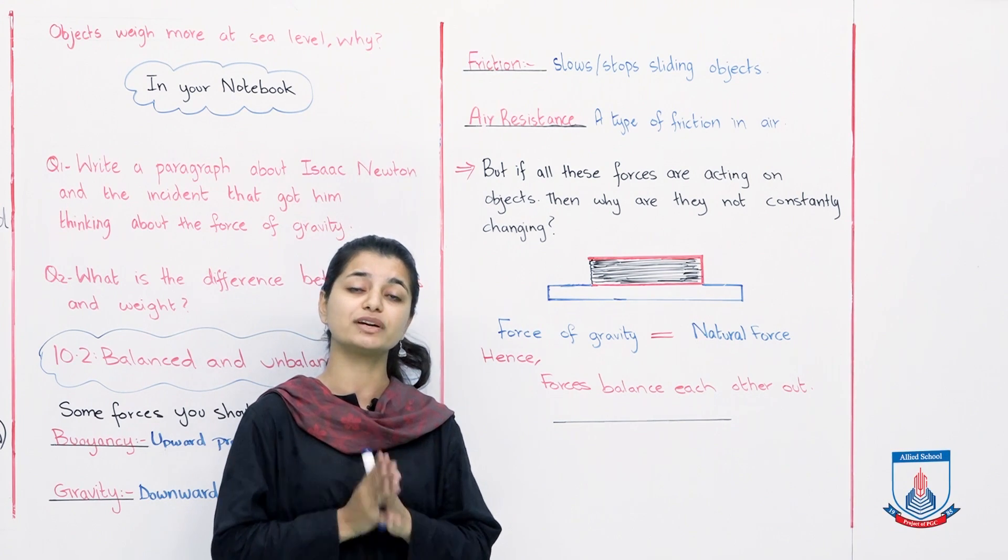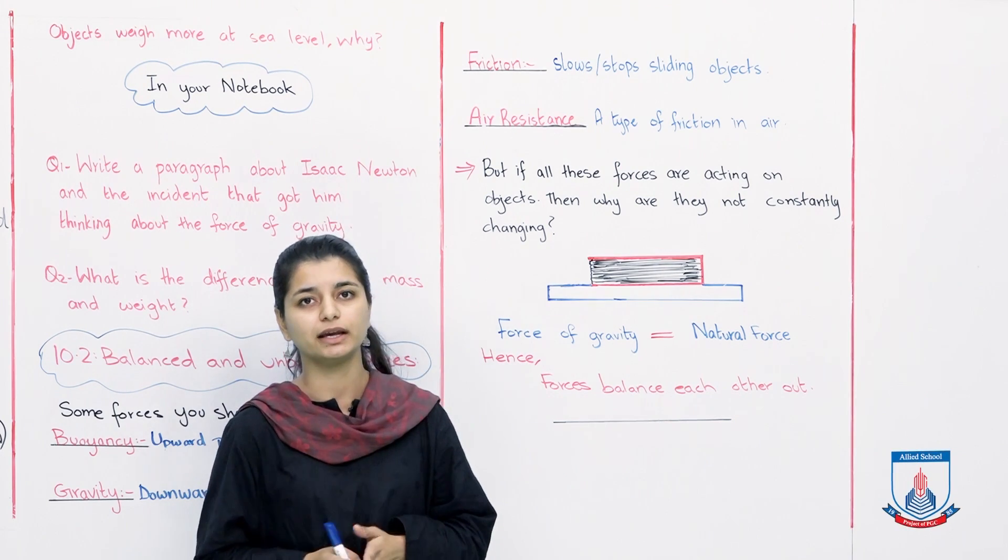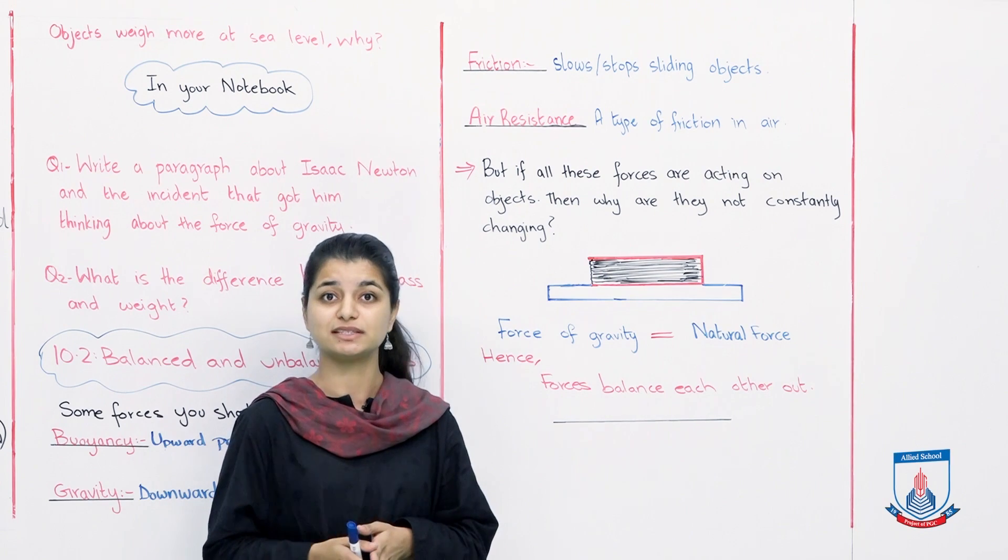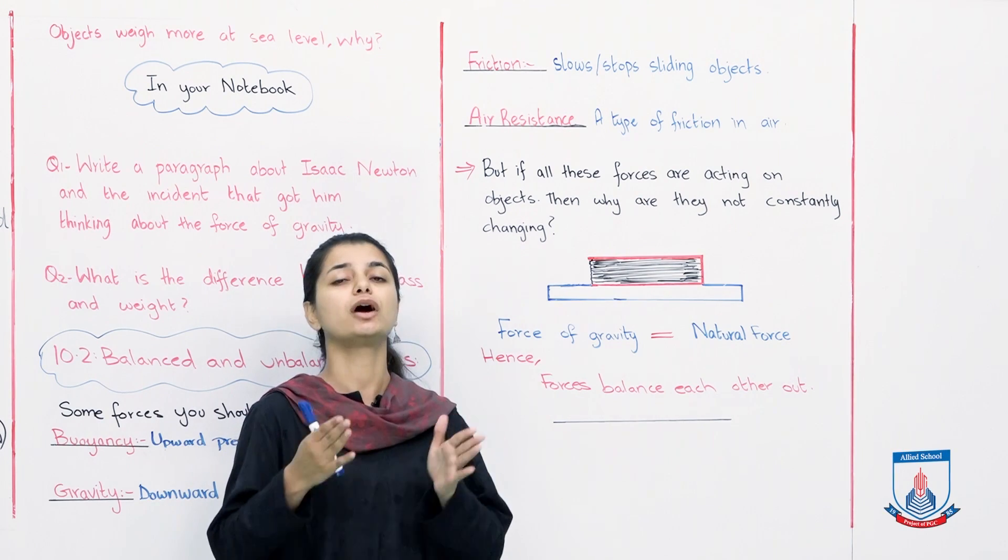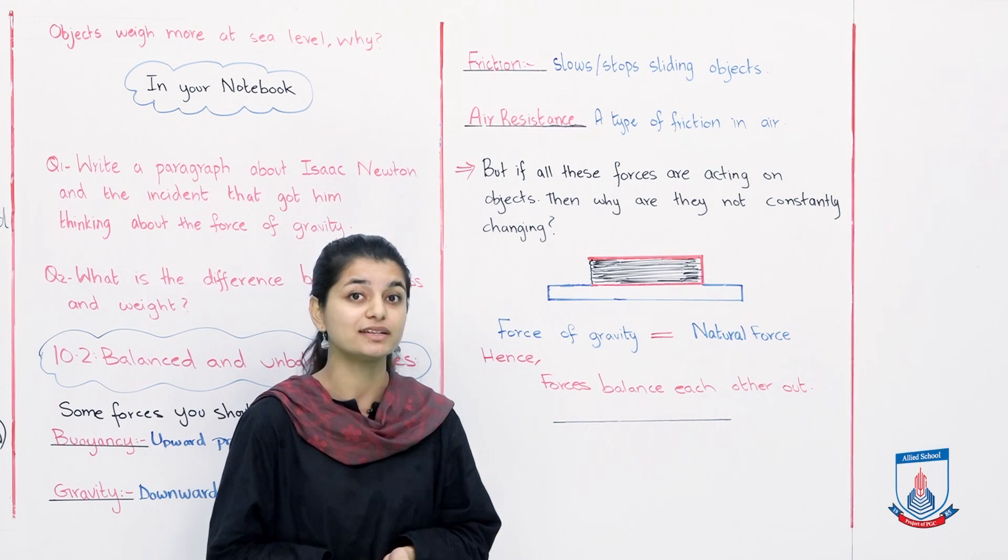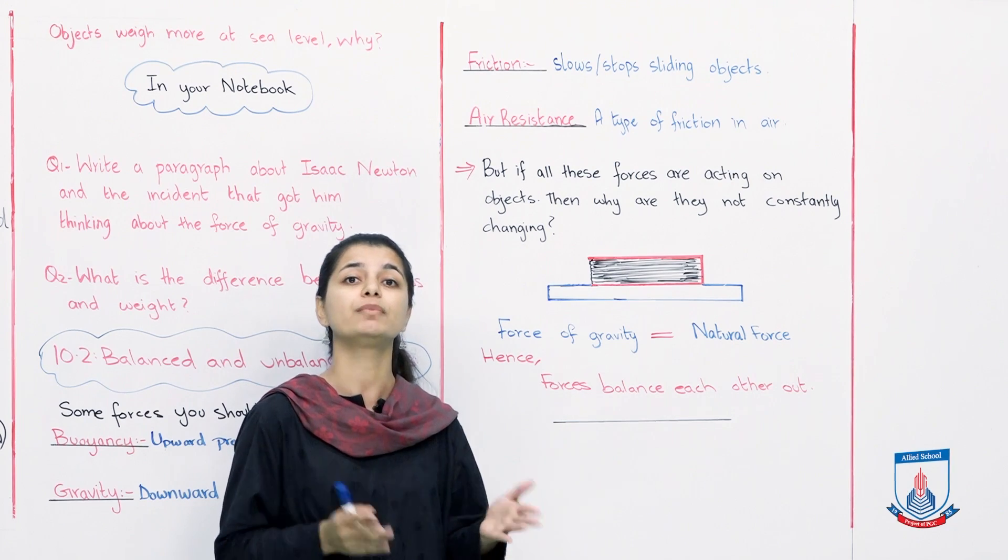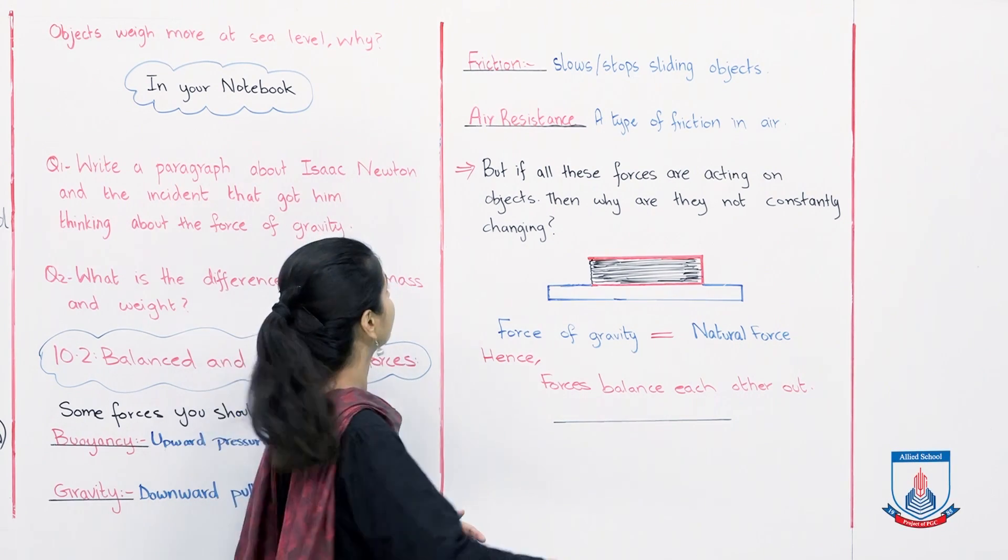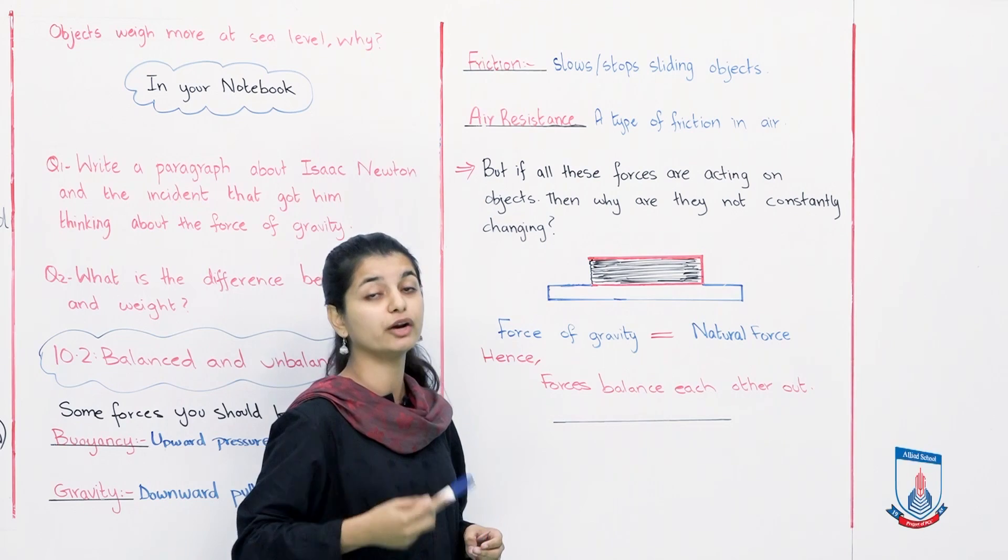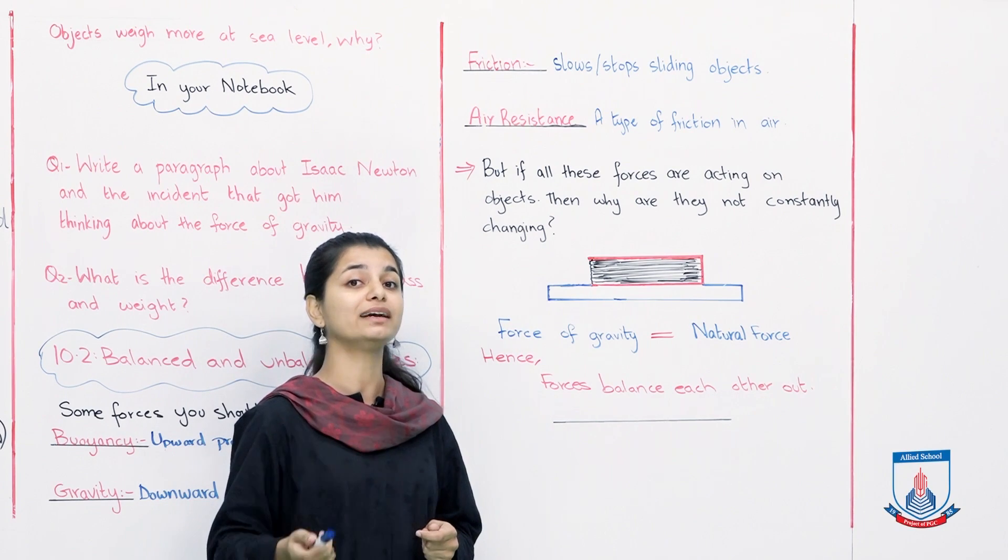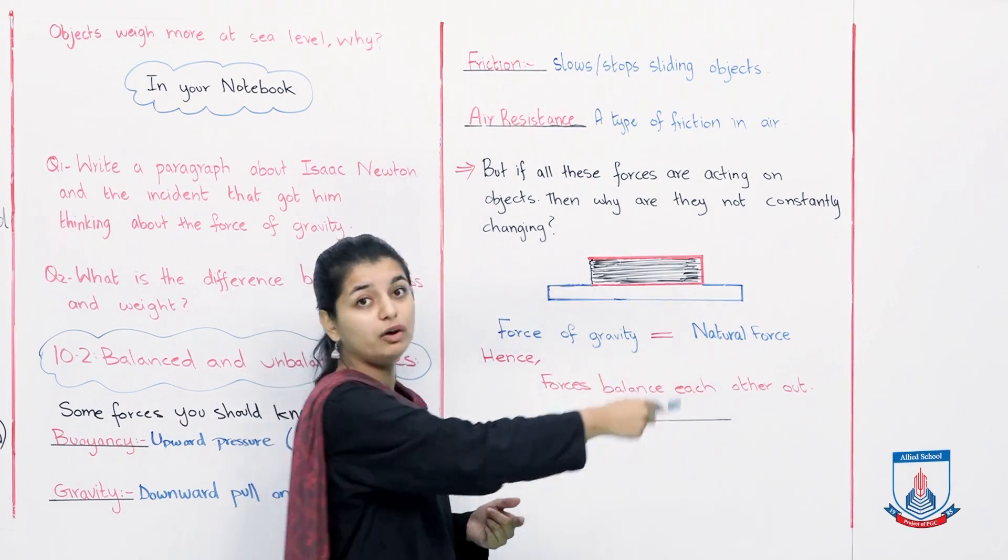Question comes to mind that if every time, on every object, sometimes gravity acts, sometimes upward force acts, sometimes air resistance acts, sometimes friction acts. So objects should constantly change, right? They should constantly be moving in different motions and acting in different ways. But that doesn't happen. Why? That's the reason why the different forces have to balance each other. Let's read. But if all these forces are acting on objects, then why are they not constantly changing?